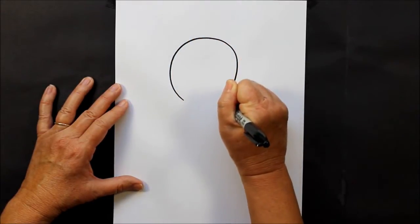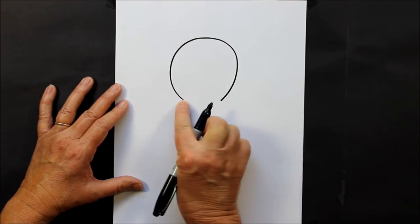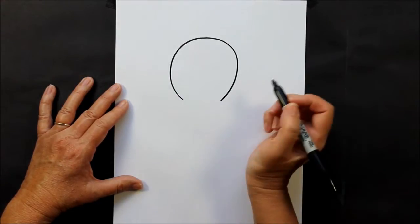The first thing that you're going to do is make an upside down C just like that. Make sure it's not closed at the bottom. Now we're going to go back up on the side, the top side of the C.